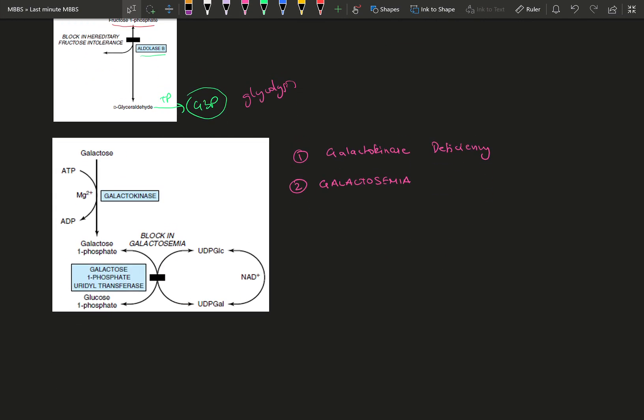And then moving on to galactose. Galactose is very simple. Same thing goes to galactose 1-phosphate and then goes into glycogen metabolism. You see this UDP glucose over here.